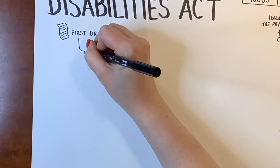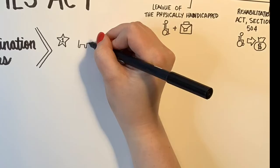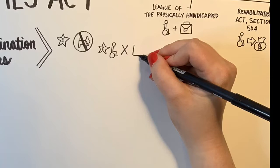The first version of the ADA was introduced in April 1988. A national campaign was started to write discrimination diaries, to document daily instances of inaccessibility and discrimination. This was used to help raise awareness about the barriers to daily living for people with disabilities.